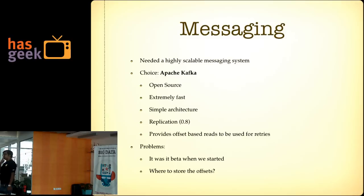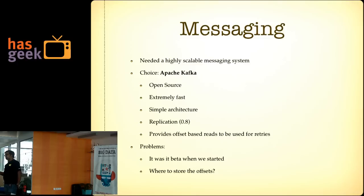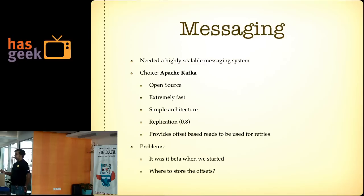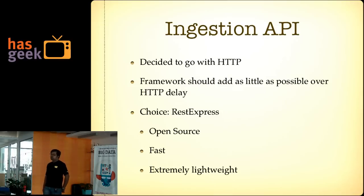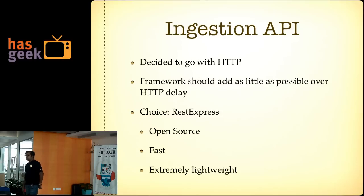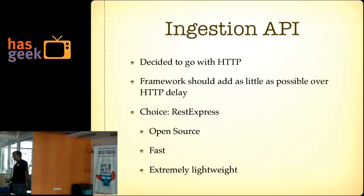Kafka has two sets of consumers — a high-level consumer and a low-level consumer. The high-level consumer has no ack mechanism; it writes the offset to Zookeeper and then gives you the message. We wanted to use the low-level consumer where you have absolute control and can read from any particular offset, but in that case you have to maintain your own offset. For the ingestion API, because of the multi-platform requirement, we didn't want anything fancy and wanted to see how much latency it was adding. We decided to go with the fastest available framework — REST Express — after evaluating options like Dropwizard.